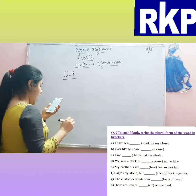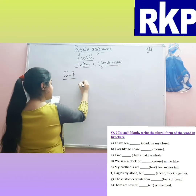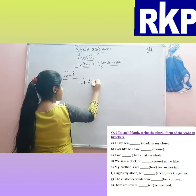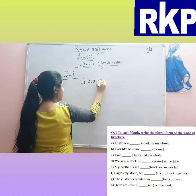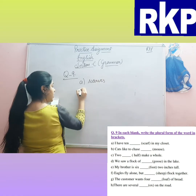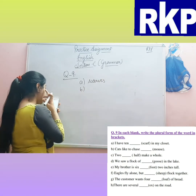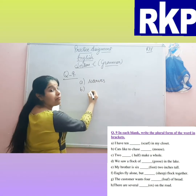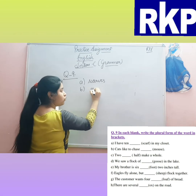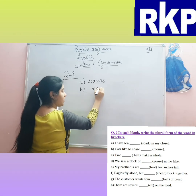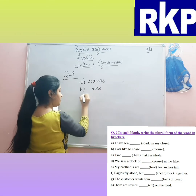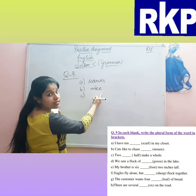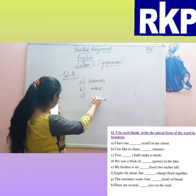A: 'I have ten ___.' — Scarves, S-C-A-R-V-E-S. B: 'Cats like to chase ___.' — Mouse becomes mice. The plural of mouse is not 'mouses' — it is 'mice.'